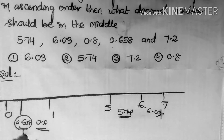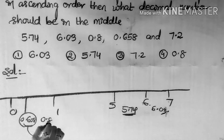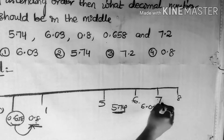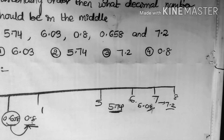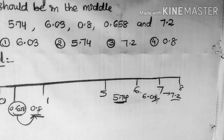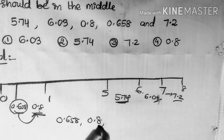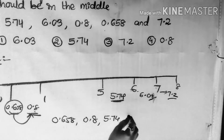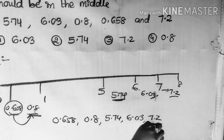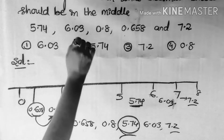After 0.658, the number 0.8 comes. The last number is 7.2, which comes after 7. From the number line, the ascending order is: 0.658, 0.8, 5.74, 6.03, and 7.2. The middle number is 5.74, which is the second option.